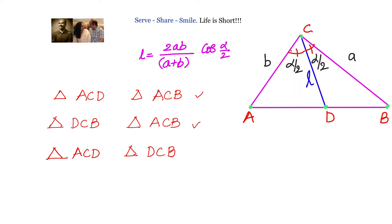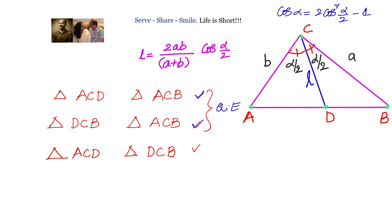We can prove this using any one of these combinations. However, for the first and second ways, we also need the half-angle formula: cos α = 2cos²(α/2) − 1, and we end up with a quadratic equation, making those methods lengthy. So we will take the third way, considering triangles ACD and DCB, which gives a linear equation in one variable.